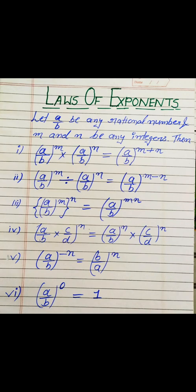The fifth law: if a rational number has a negative power, we can remove the negative sign by taking the reciprocal of the base. So (a upon b) to the power −n becomes (b upon a) to the power +n. The sixth law: any rational number (a upon b) with power 0 has a value of 1 — any number or variable with power 0 equals 1.